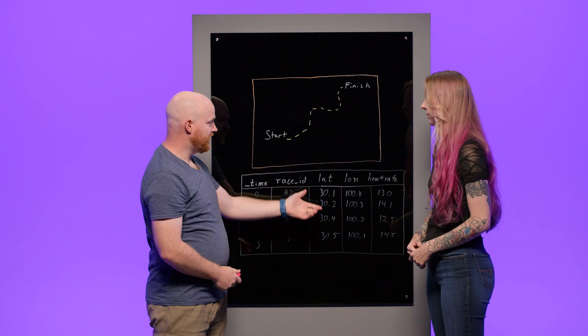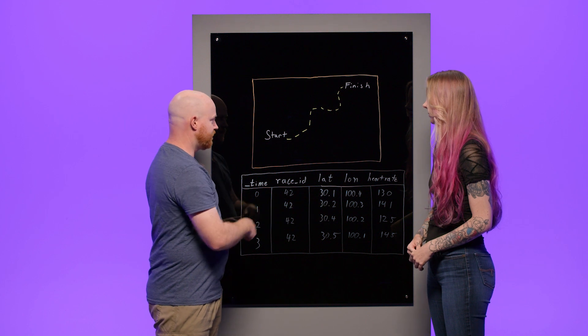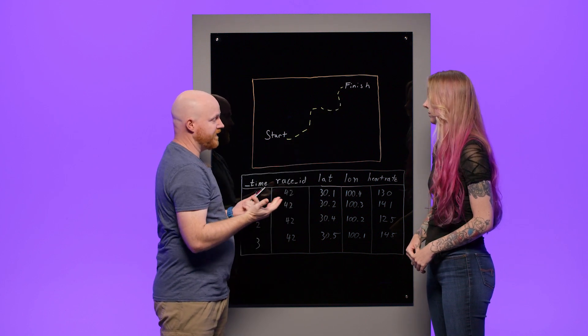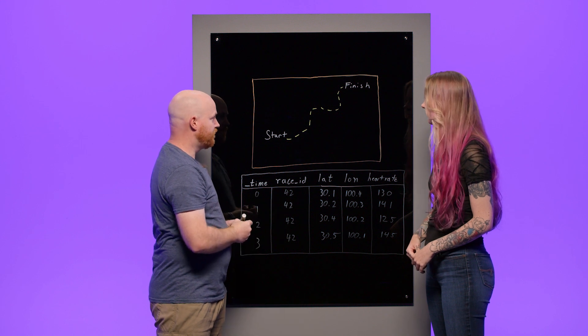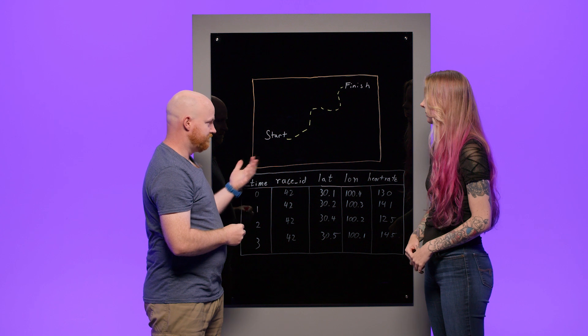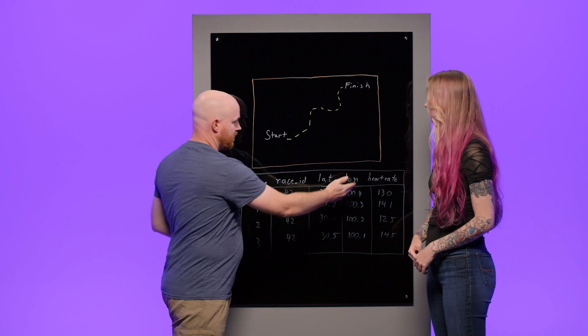Why does the time element matter? The time element allows us to correlate our location data with other data that may be important in the geotemporal space. Let's say this data here is of a runner running a 5k race, and they want to understand and improve races going forward. They've loaded their geotemporal data into some application, and it came with the heart rate data.